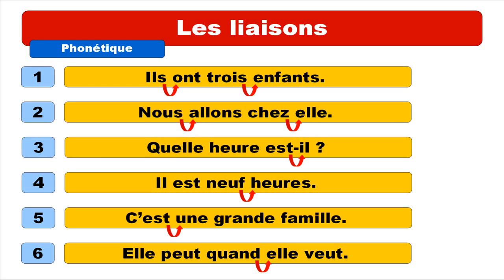So let's repeat all these examples together. Number one: ils ont trois enfants. Repeat: ils ont trois enfants. Number two: nous allons chez elle. Repeat: nous allons chez elle. Numéro trois: quelle heure est-il? Repeat: quelle heure est-il? Numéro quatre: il est neuf heures. Repeat: il est neuf heures. Numéro cinq: c'est une grande famille. Repeat: c'est une grande famille. Numéro six: elle peut quand elle veut. Repeat: elle peut quand elle veut.